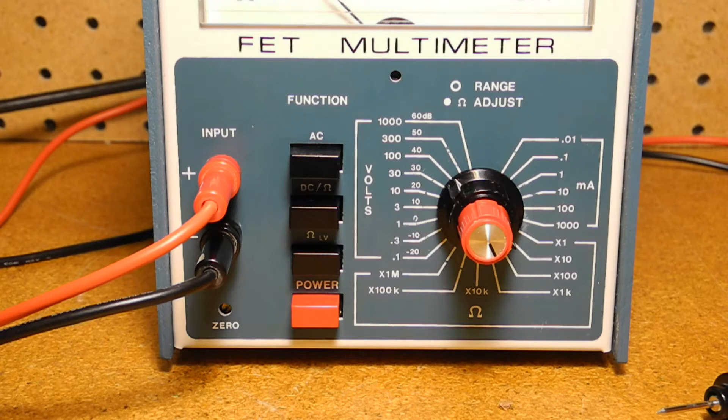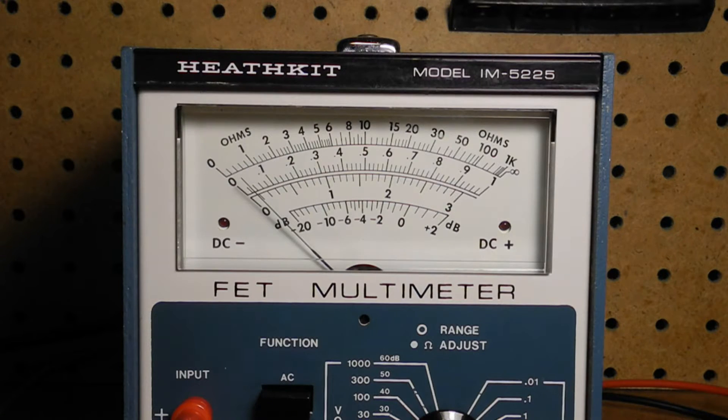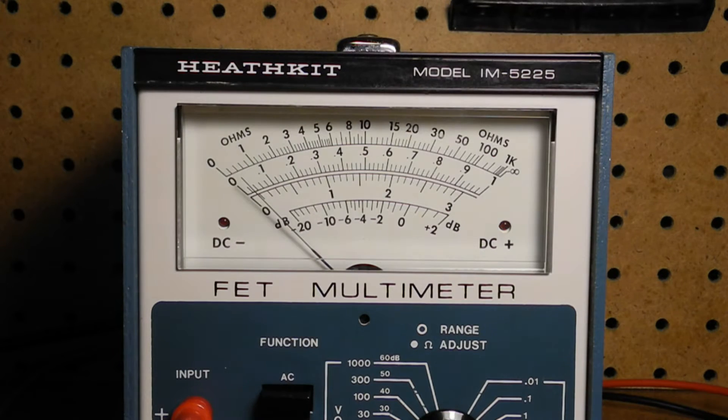AC volts supports the same nine ranges with an accuracy of plus or minus 3% for 60 Hz sine waves. It responds to the average value of the rectified waveform and is calibrated in RMS voltage. Input impedance is 10 megaohms with about 100 pF input capacitance. The frequency response is 10 Hz to 100 kHz, going down to 50 kHz on the 1000 volt range. It also has a scale for showing AC voltages in decibels based on 0 dB being 1 milliwatt across 600 ohms.